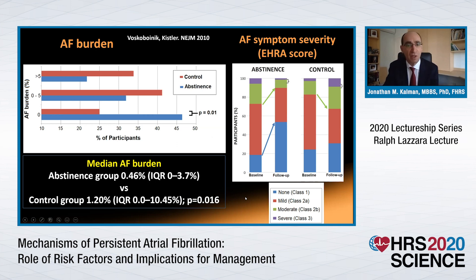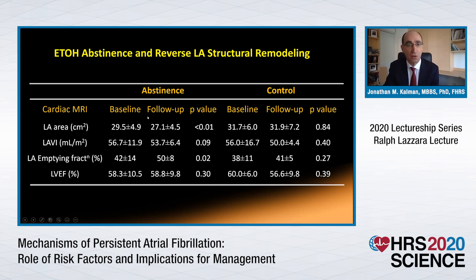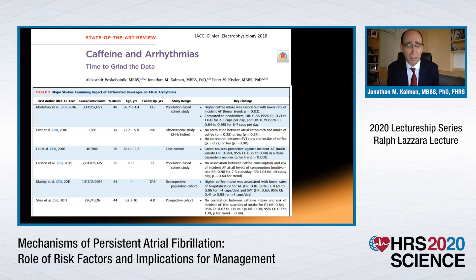There was also evidence of reverse structural remodelling: left atrial area and volume index decreased in the abstinence group but not the control group, and emptying fraction improved only in the abstinence group — structural reverse remodelling underlying improved clinical outcomes.